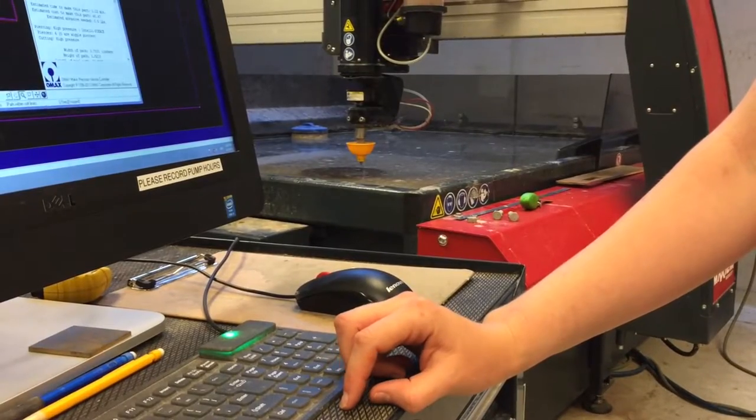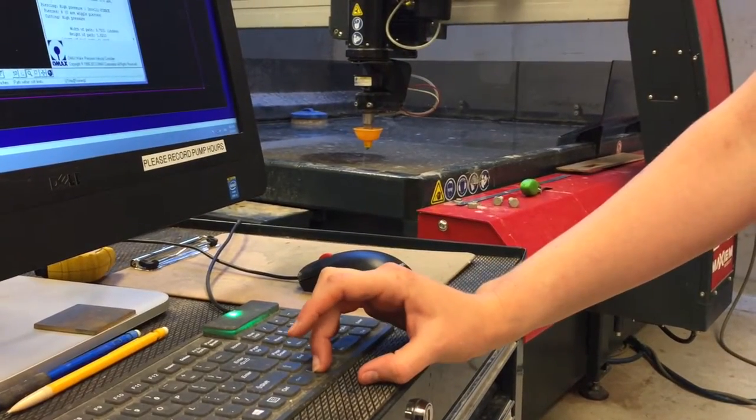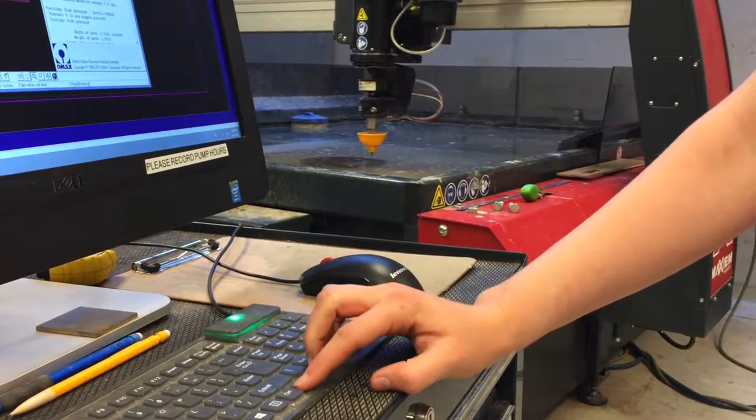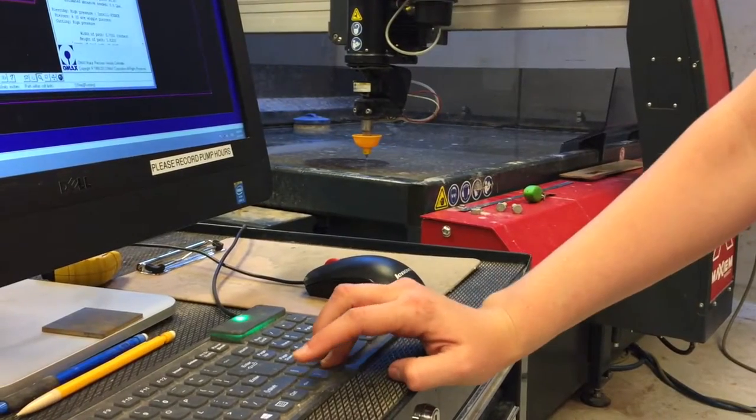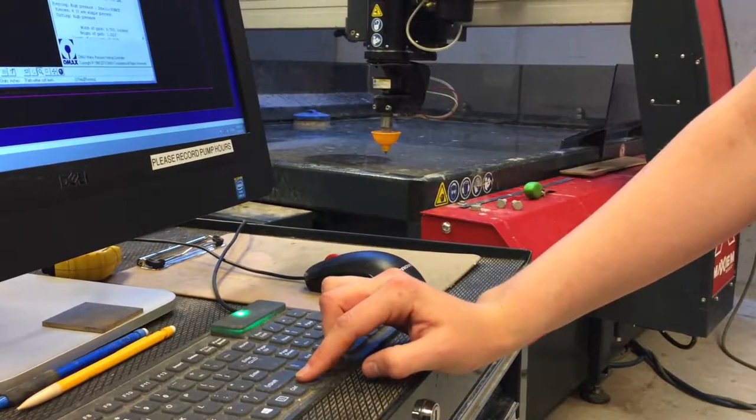You can use the arrow keys to move the nozzle around on the working area. So I can use the down arrow, the up arrow, left, and right. And I can use this to bring the nozzle over to where I want to start.